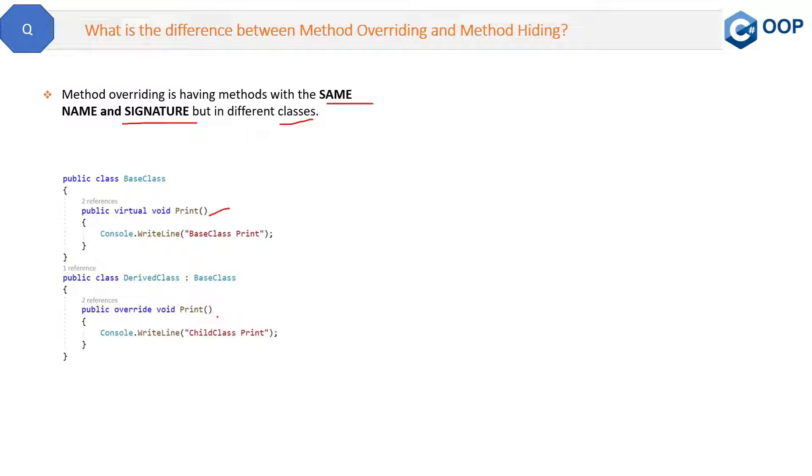See the code here. Two methods, one is print and another is also print. So they are of same name but they are in different classes - one is in base class and another one is derived class. One is marked as virtual and another one is marked as override.